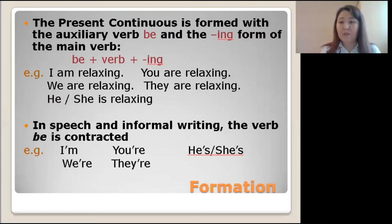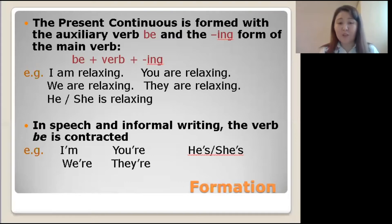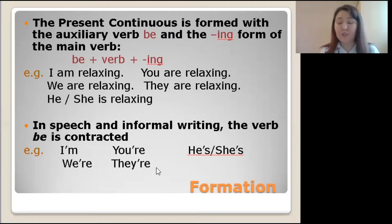Look at these examples: I am relaxing, you are relaxing, we are relaxing, they are relaxing, and he/she is relaxing. In speech and in informal writing, the verb 'be' is contracted. Here you can see the examples with the contractions of the auxiliary verb 'be.'